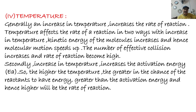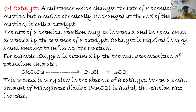Factor number five: catalyst. A catalyst is a substance that changes the rate of a chemical reaction but remains chemically unchanged at the end of the reaction. Adding a catalyst can increase or decrease the speed of a reaction. A catalyst is always required in very small amounts to influence reaction speed. For example, oxygen is obtained by the thermal decomposition of potassium chlorate: 2KClO3 → 2KCl + 3O2. This process is very slow in the absence of a catalyst, but when a small amount of MnO2 is added, the reaction rate increases.